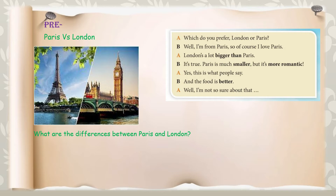Let's take a look at the conversation between A and B talking about London and Paris. A says: 'Which do you prefer, London or Paris?' B replies: 'Well, I'm from Paris so of course I love Paris. London is bigger than Paris.' 'It's true, Paris is much smaller, but it's more romantic.' 'Yes, this is what people say, and the food in Paris is better — I'm not so sure about that.'